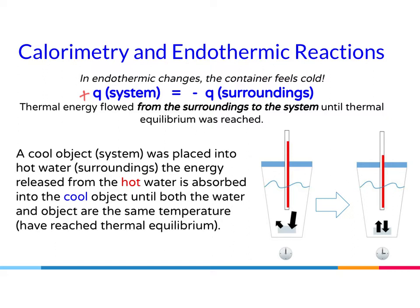So, a cool object — a piece of metal — was placed into hot water, which was the surroundings. The energy released from the hot water is absorbed into the cool object until both the water and the object are the same temperature. As you can see, the energy flow from the liquid water has a larger arrow than the energy flow from the cool object until, after time passes, the arrows become the same because the energy flow is equal — the temperature of the surroundings and the system are equal.